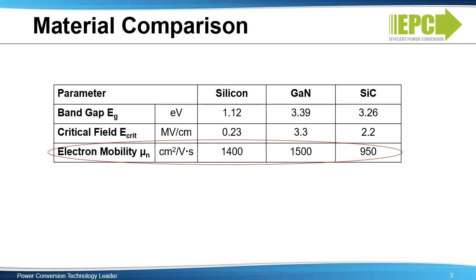The mobility determines how sticky the crystal is to electrons. The higher the value, the more easily the electrons can move without much resistance. The mobility of GaN is higher than that of both silicon and silicon carbide. This mobility, in combination with all the other elements in this chart, is why GaN is theoretically the best material for a power transistor. GaN produces devices with superior on resistance, breakdown voltage, and smaller size compared to silicon.